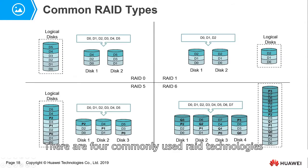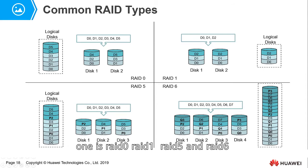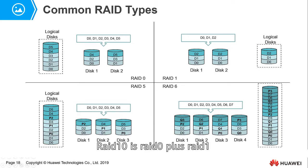There are four commonly used RAID technologies: RAID 0, RAID 1, RAID 5, and RAID 6. You may also see RAID 10 and RAID 50. RAID 10 is RAID 0 plus RAID 1, and RAID 50 is RAID 0 plus RAID 5.